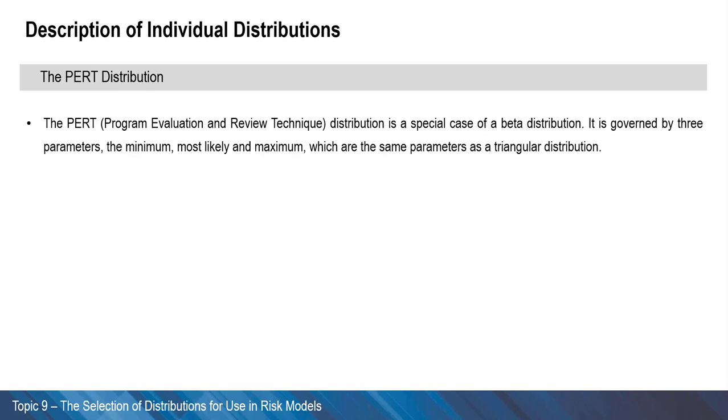The PERT distribution is a special case of a beta distribution. It is governed by three parameters: the minimum, most likely, and maximum, which are the same parameters as a triangular distribution.